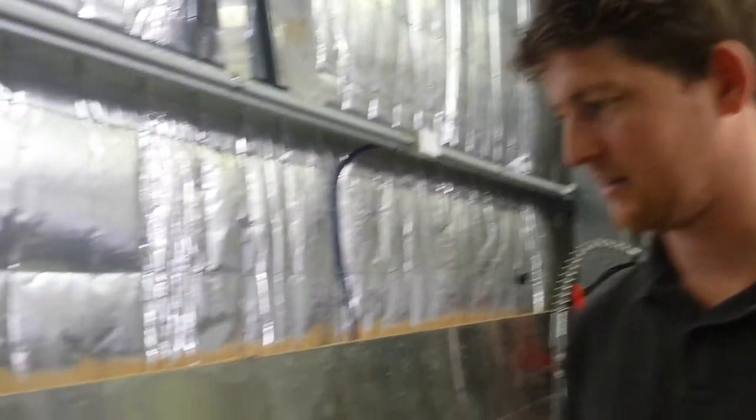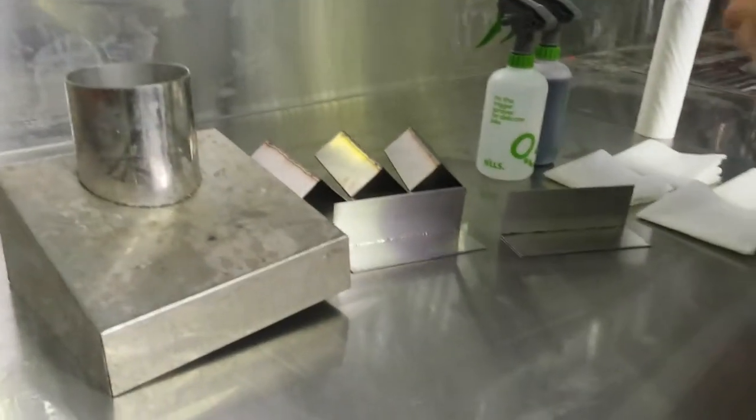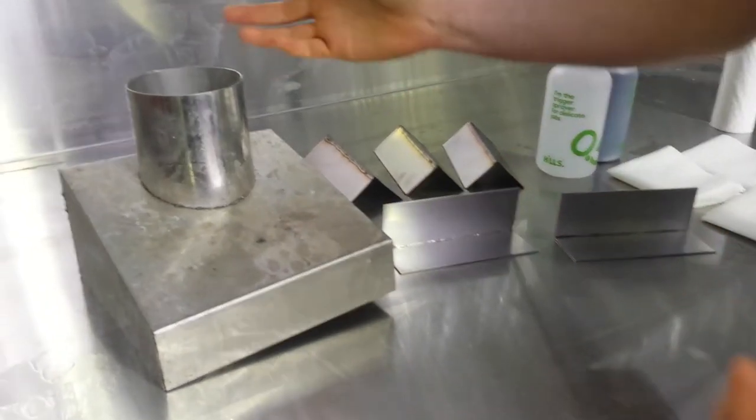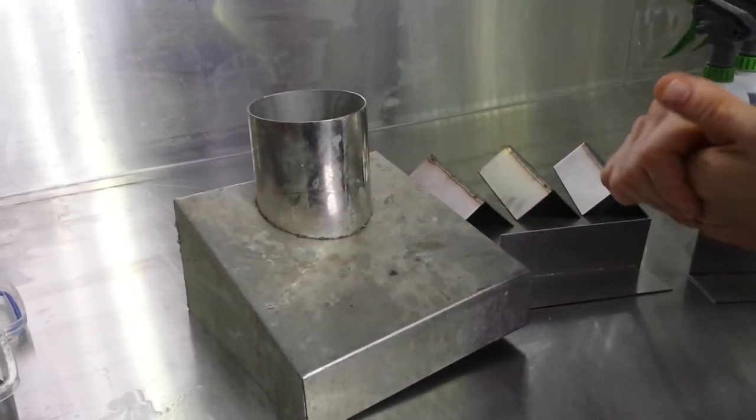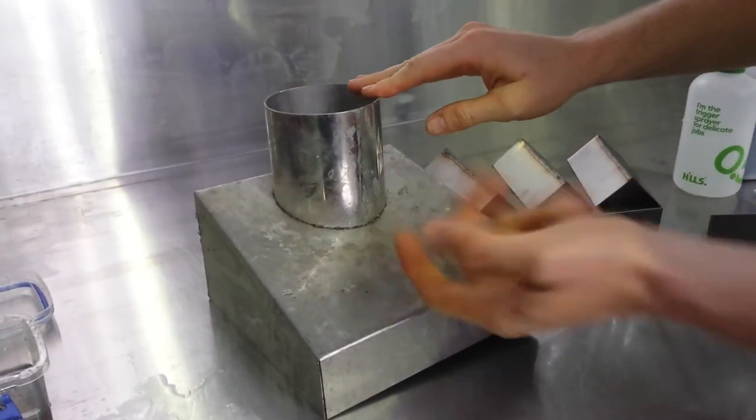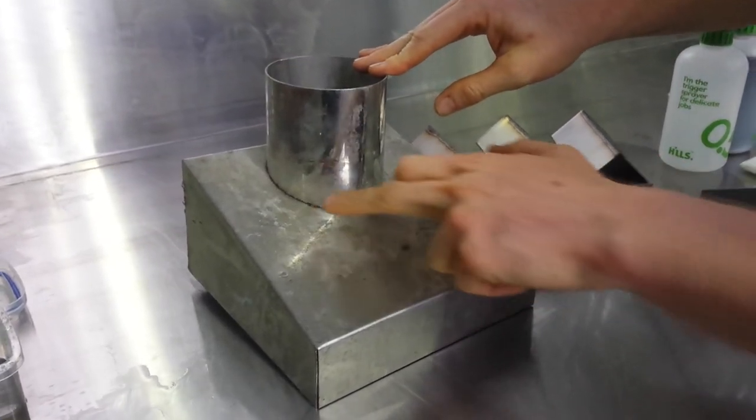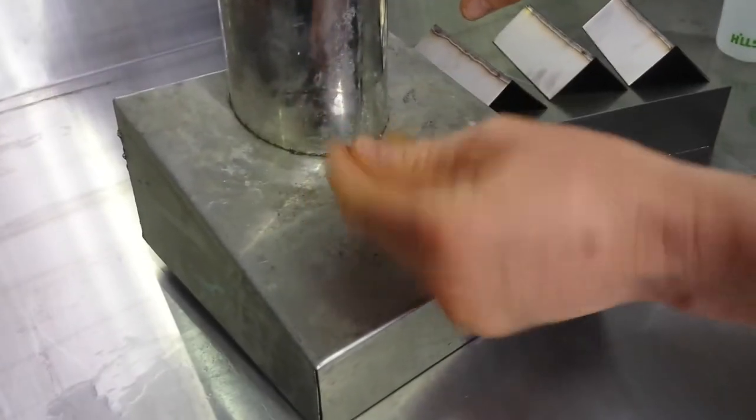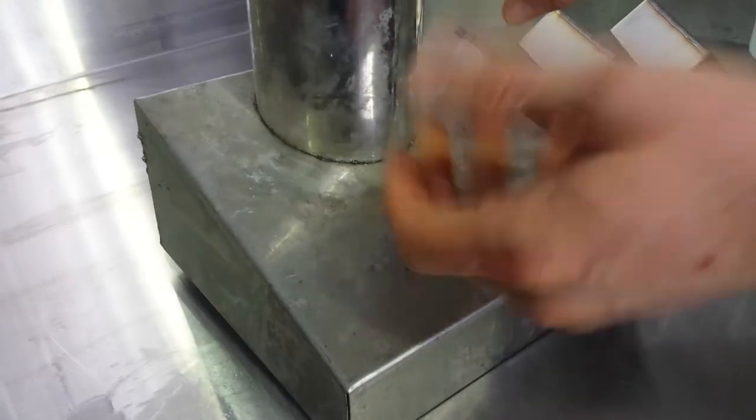So if we just come down to our bench here, our test bench, we can actually see on this product here, it's an old piece that we've had at the back, but there are signs of this white residue that's been left behind. It's powdery, but it does emanate from where you've cleaned the weld or any solution left behind.